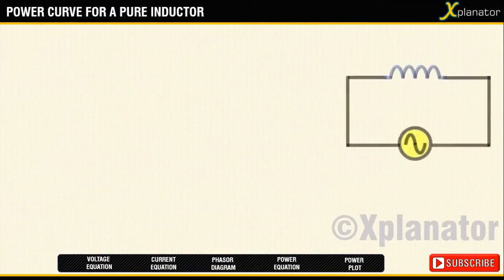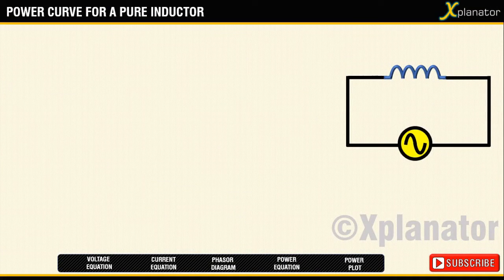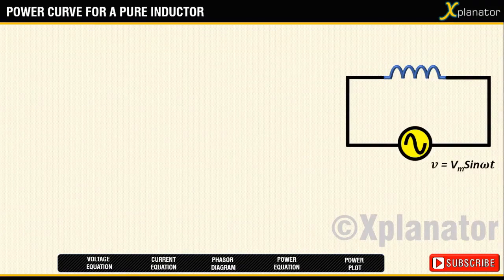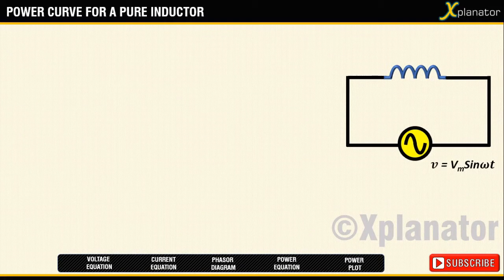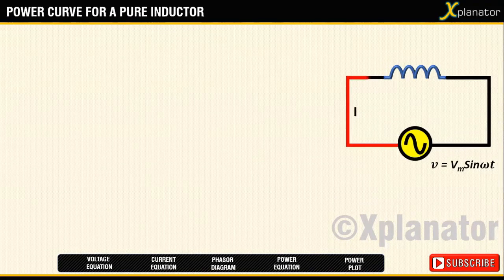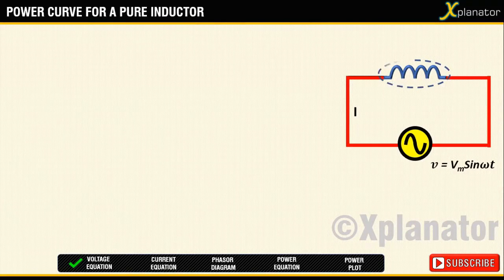Consider a circuit with a pure inductor and an AC supply. The alternating voltage applied is denoted by the equation V equals Vm sin ωt. Let the current flowing in the closed circuit be of magnitude I. The electrical energy flowing in the circuit is saved in the form of magnetic field in the inductor.